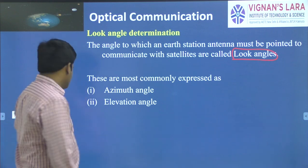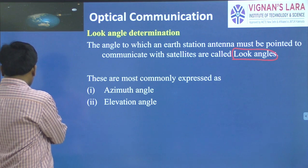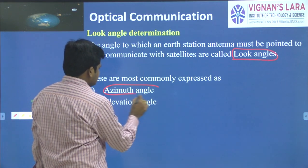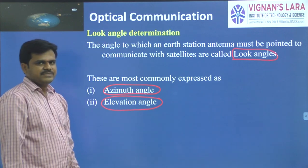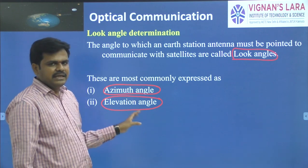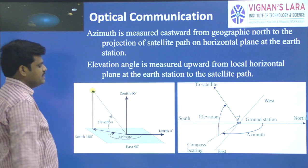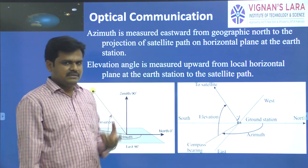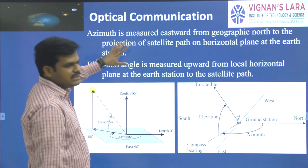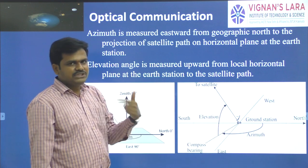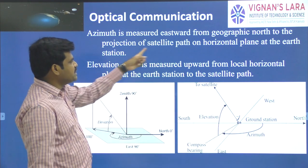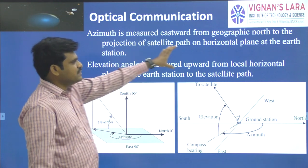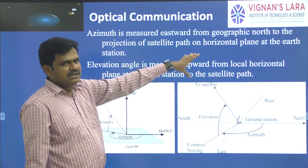There are two types of look angles: one is azimuth angle and another one is elevation angle. Azimuth angle is measured eastward from geographic north to the projection of the satellite path on the horizontal plane at the earth station.